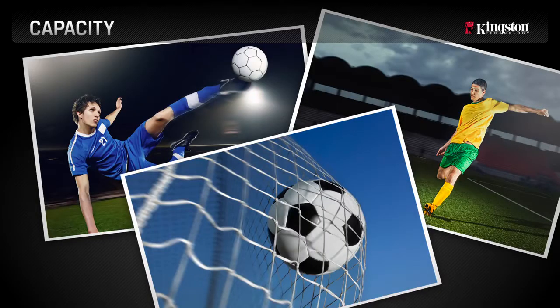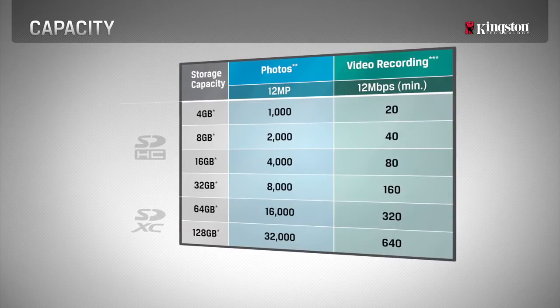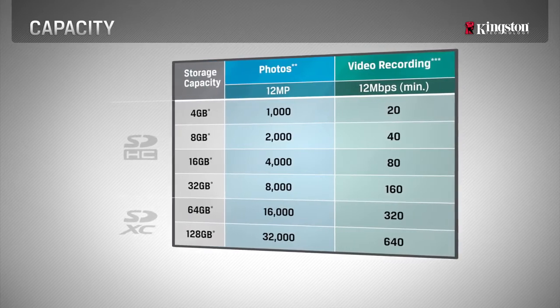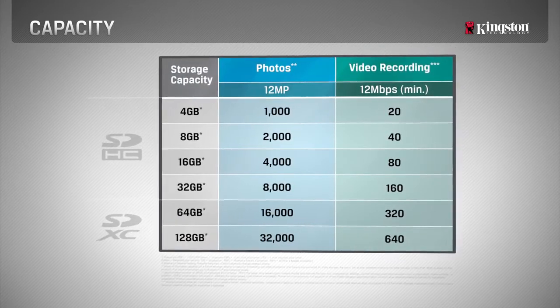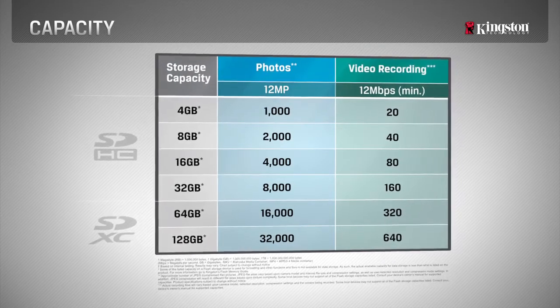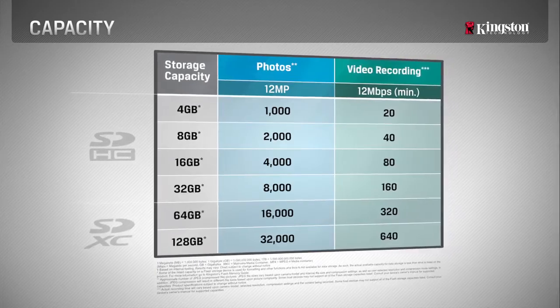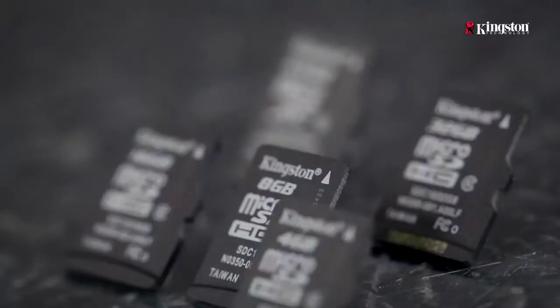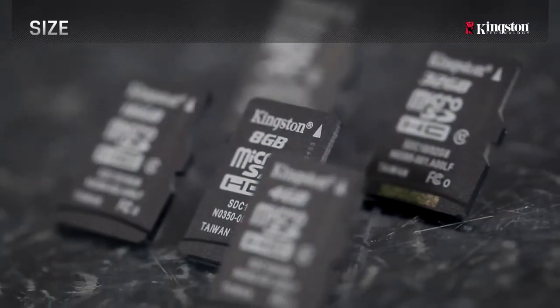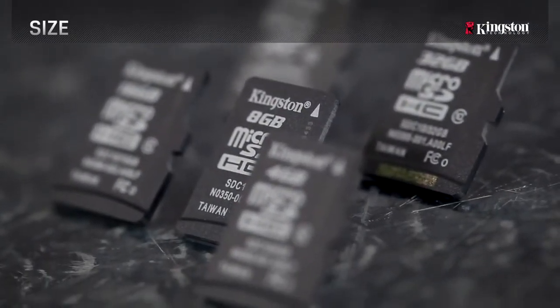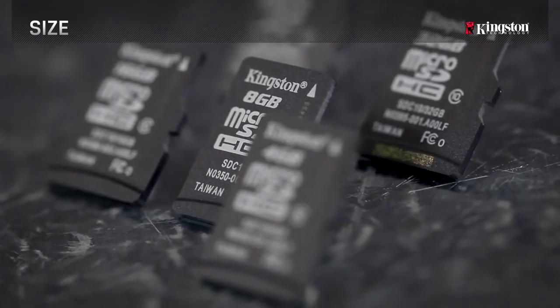Higher resolution cameras, or those that shoot video, need lots of space, and higher capacity cards fill that need, as you can see here. Micro SD cards are like SD cards, but in a smaller format.